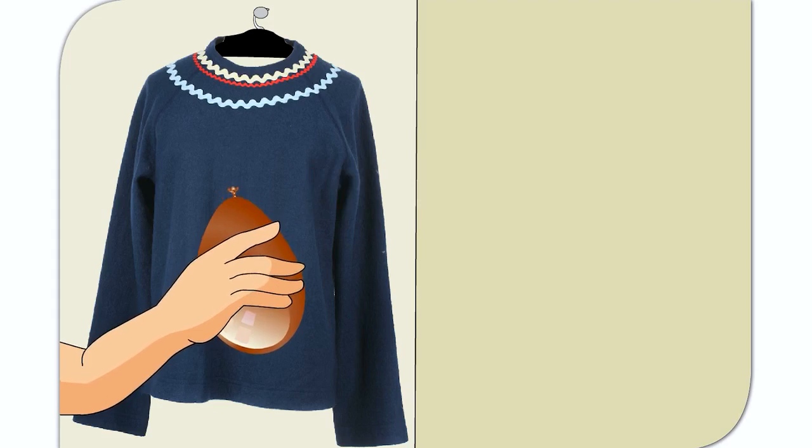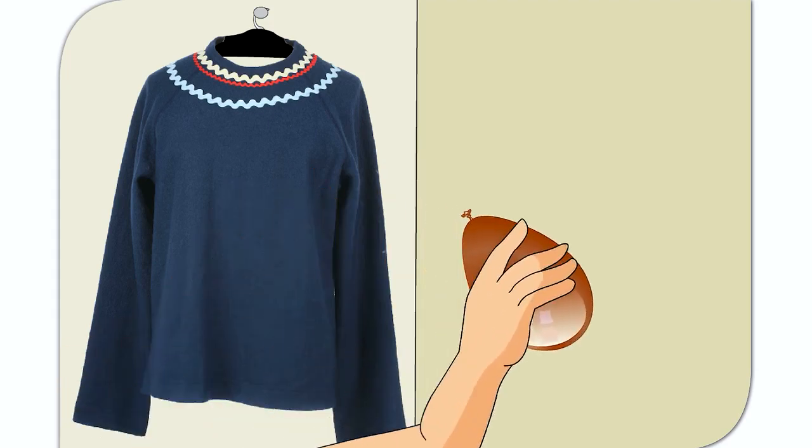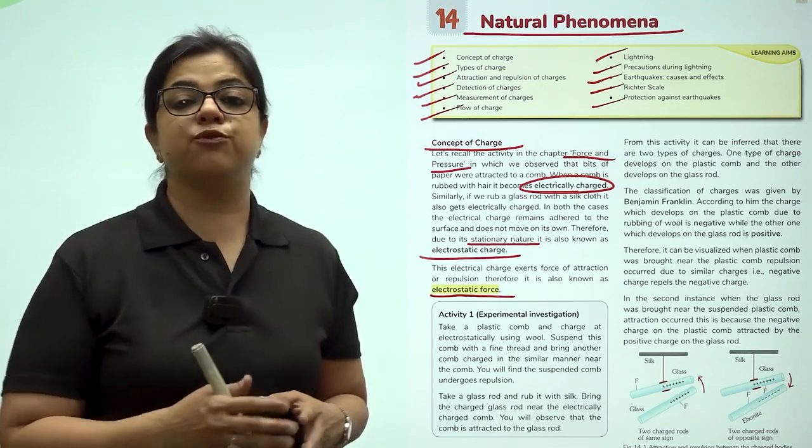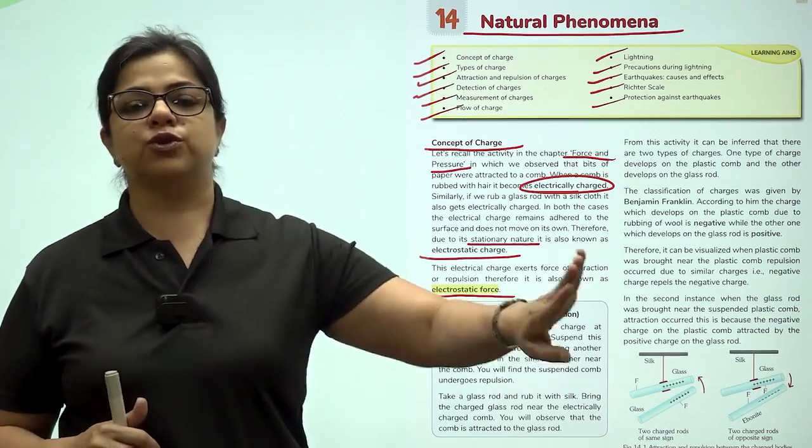Take a balloon and rub it on a woolen sweater several times. Place the balloon close to the wall. It sticks to the wall because the balloon gets electrically charged on rubbing against the woolen sweater. Now depending on the charge, this can be a force of attraction or a force of repulsion.